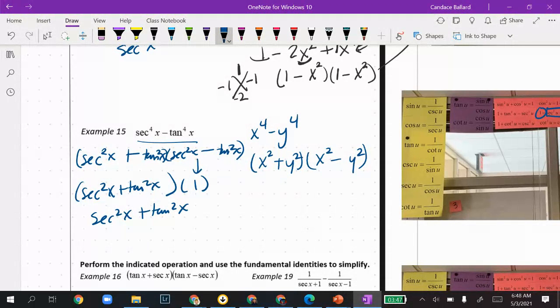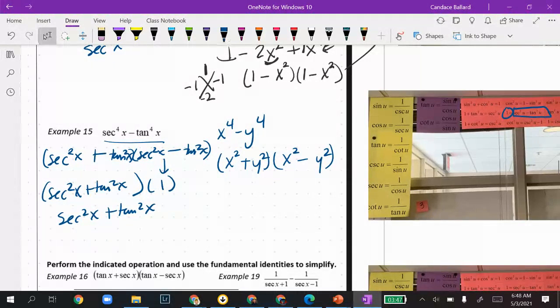I'm going to leave it there. It is possible that maybe they want us to substitute in for the secant squared, so if that doesn't become the answer, you might have to go a little bit further.